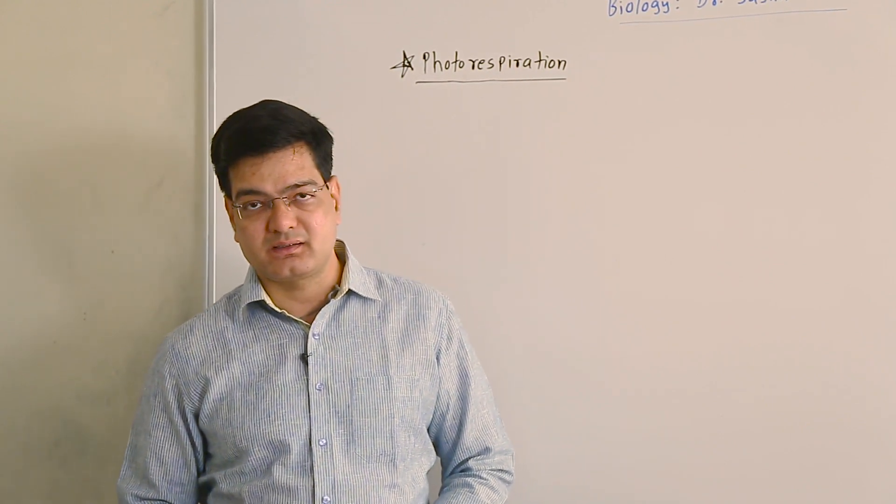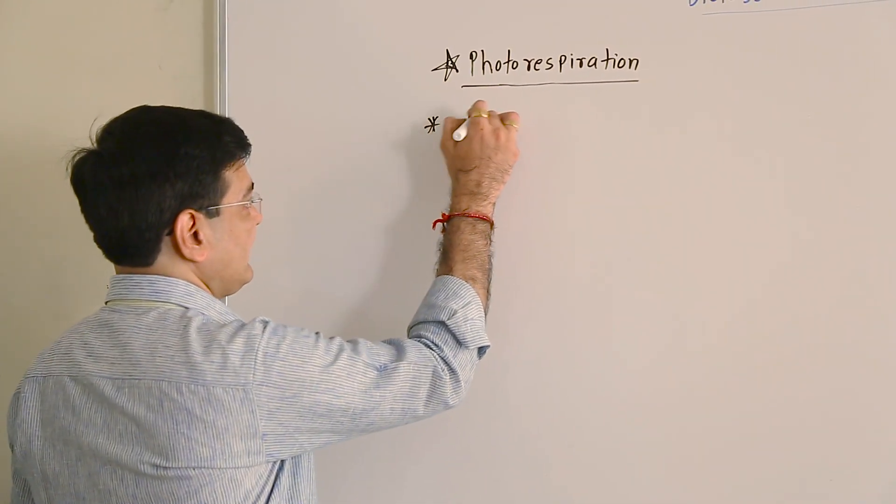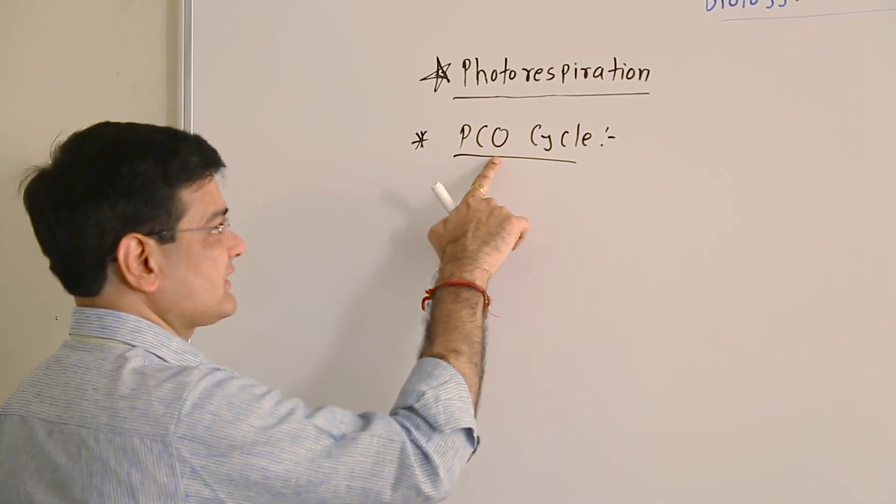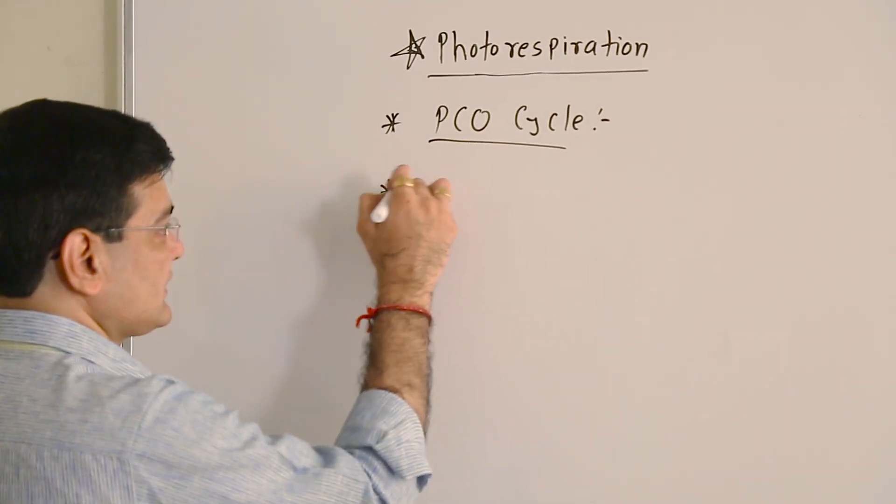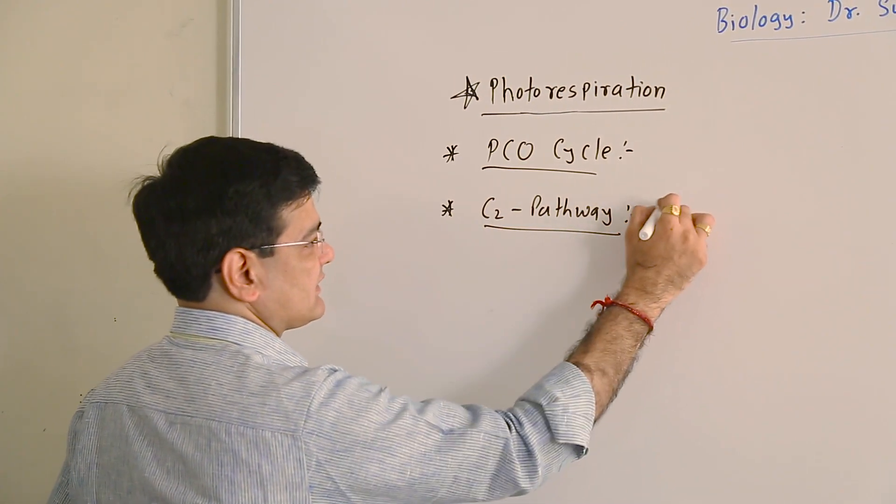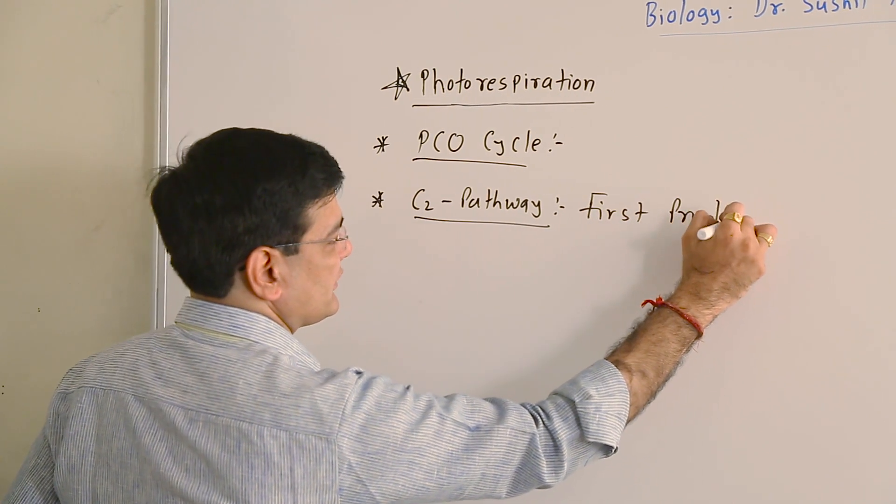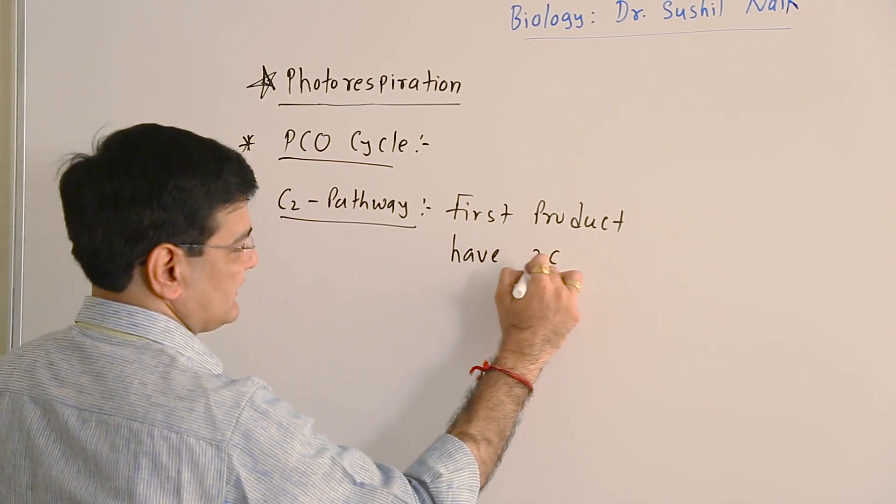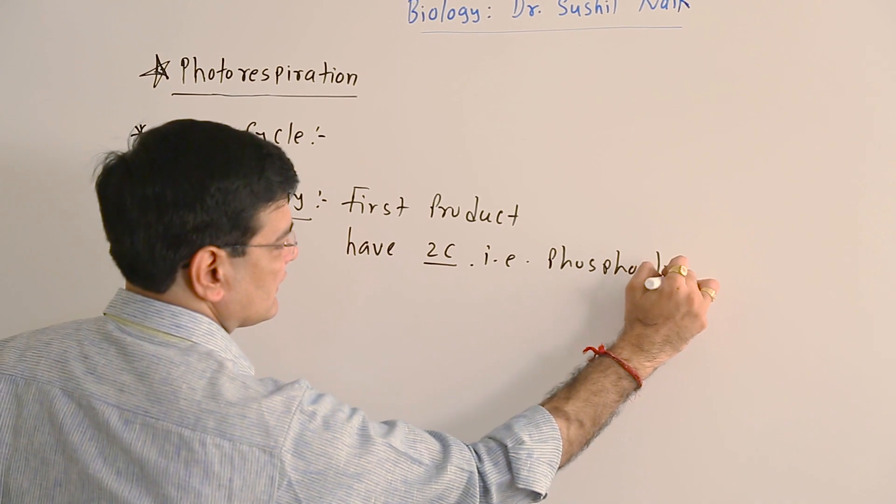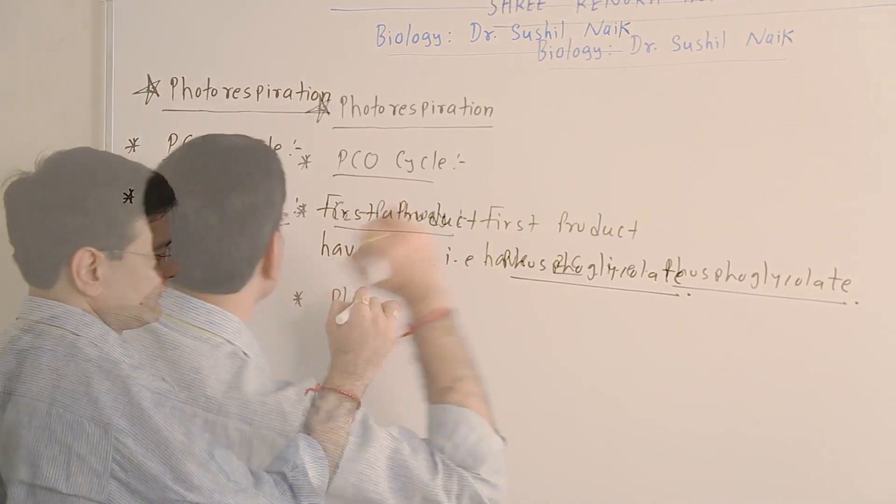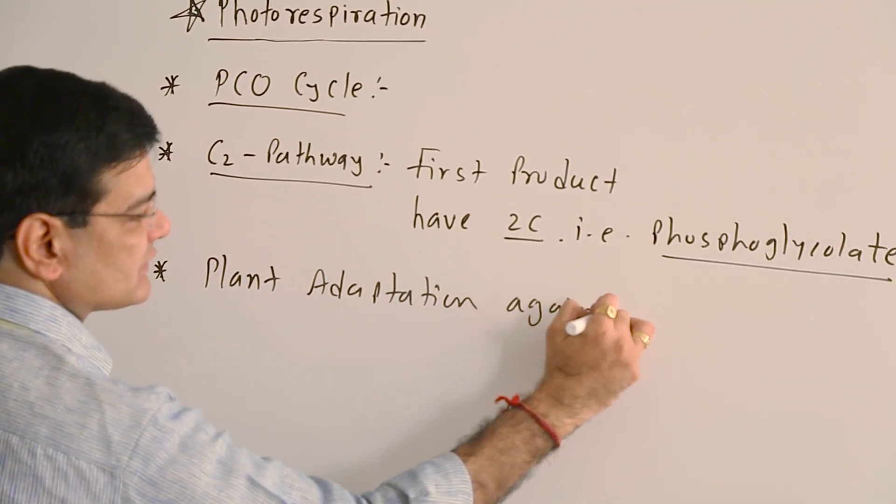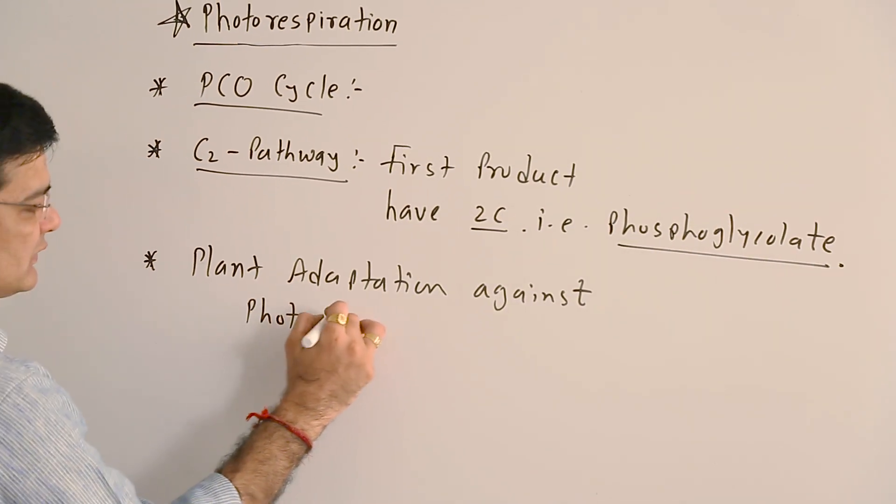Photorespiration is also called the PCO cycle, that is photosynthetic carbon oxidation cycle, which is also called the C2 pathway as the first product of this process contains two carbons, and that is phosphoglycolate.